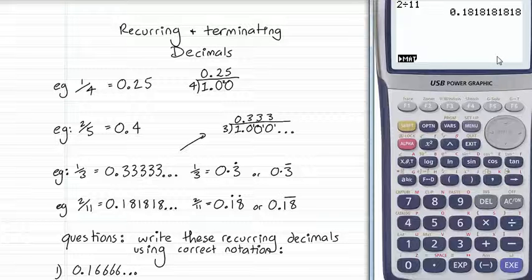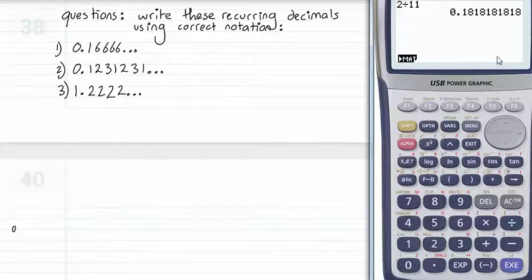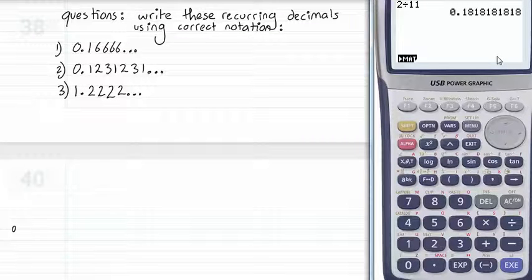So if we had to answer some questions, if we wanted to write these recurring decimals using correct notation. 0.16666. You'll notice the one doesn't repeat, it's only the six. So that's 0.16, but the dot or the bar only goes over the six.